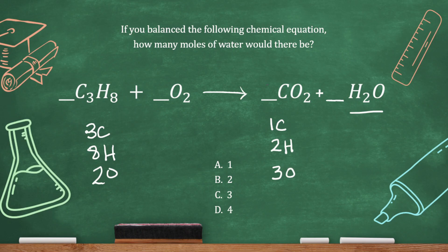Let's balance our carbon first. We need three on this side to make it equal, so let's put a three in front of here. That makes three carbons and it changes our oxygen, so let's redo our oxygen count. Three times two is six oxygens right here plus the one over here makes seven.